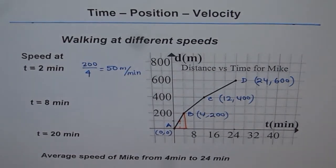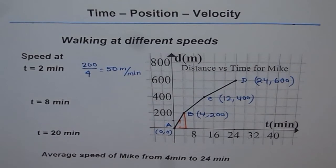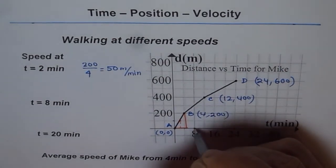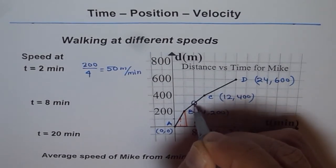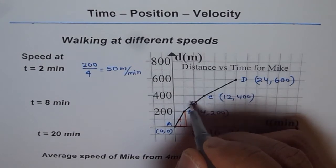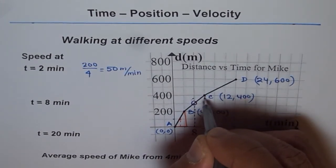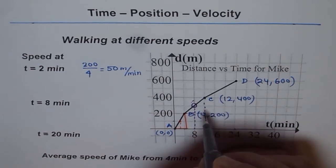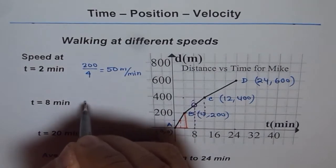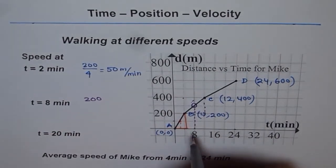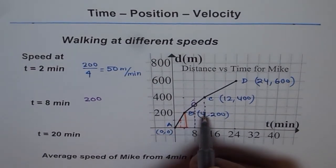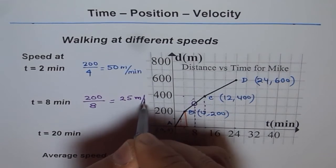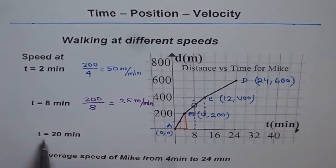For speed at t = 8 minutes, the position lies on leg BC. The slope of BC gives the speed. In the triangle for BC: change in distance is from 200 to 400, which is 200 meters; change in time is from 4 to 12, which is 8 minutes. So speed = 200 over 8 = 25 meters per minute.